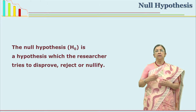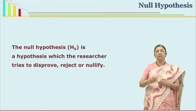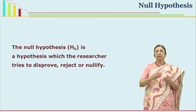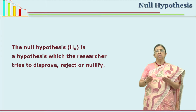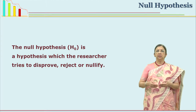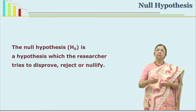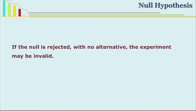You cannot reject the null hypothesis if the result may be because of chance. So you have to explore it further. In this situation we cannot reject the null hypothesis; we have to retain the null hypothesis. There must be an alternate hypothesis. If you reject the null hypothesis, that hypothesis is verified. If you do not have that, your experiment is invalid.